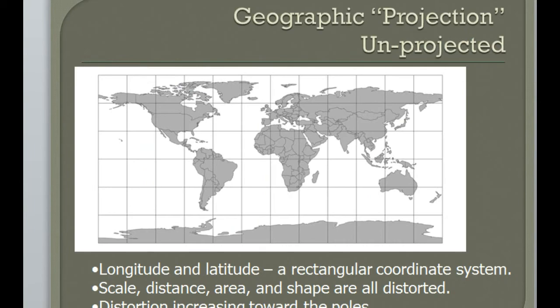Here's an example of what's called an unprojected coordinate system. Some people call it a geographic projection, but that would be a misnomer. This is just latitude and longitude laid out in an equal rectangular grid system. Huge amount of distortion in every aspect: shape, scale, area. Perhaps right along the equator it is not distorted, but pretty much distortion everywhere else.